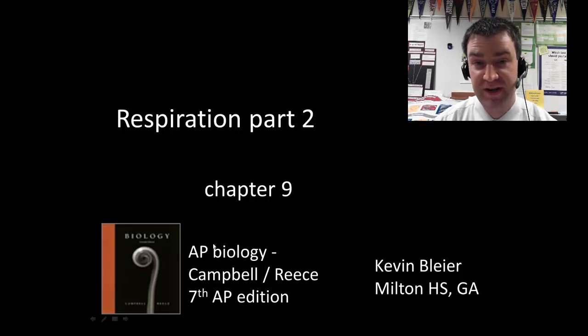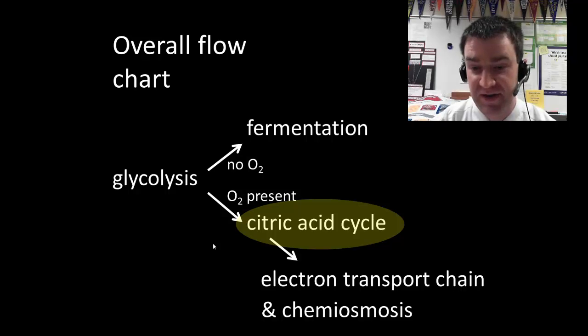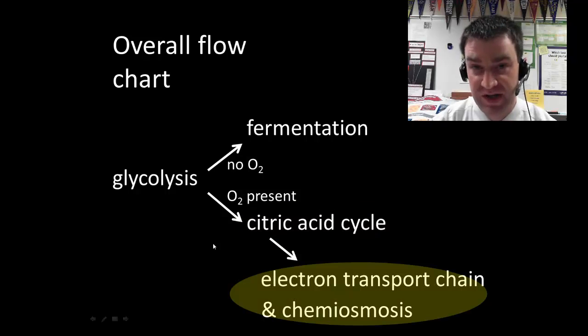So in this video we're going to finish up our discussion of cellular respiration. We're going to be discussing specifically the steps of the electron transport chain and chemiosmosis. What happens to those high-energy electrons that we generated in the previous steps?